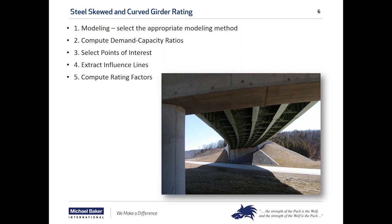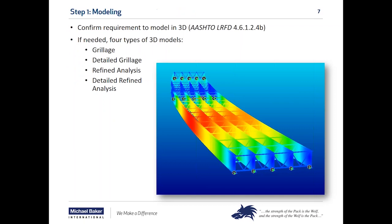Let's talk about modeling. The first thing is to see whether you really need a 3D model. Some bridges with mild skews or mild curvature can be analyzed as straight without a significant loss of accuracy. AASHTO LRFD Section 4.6.1.2.4b describes what requirements need to be met to analyze a horizontally curved steel bridge as straight. Assuming you do need a 3D model, there are four main types: a grillage model, a detailed grillage model, a refined analysis model, and a detailed refined analysis model.